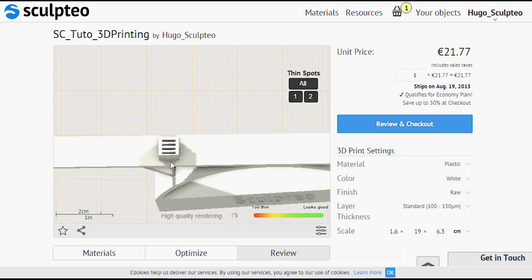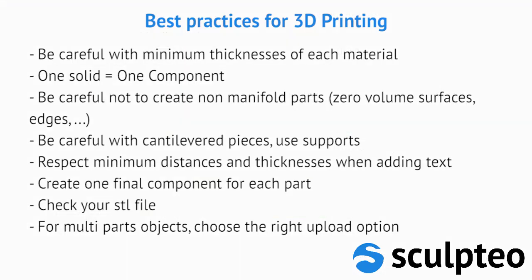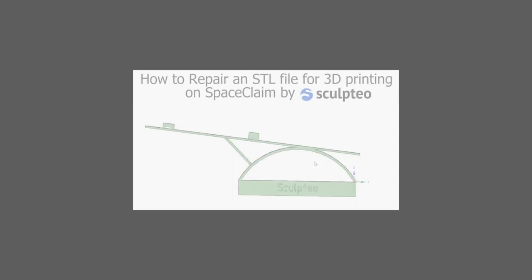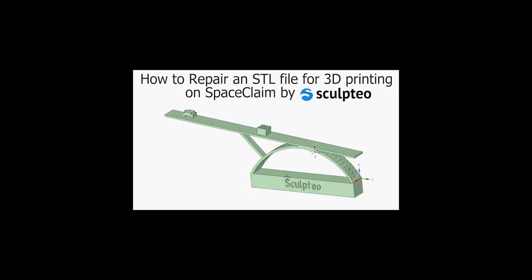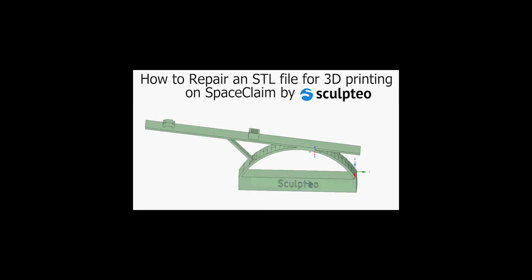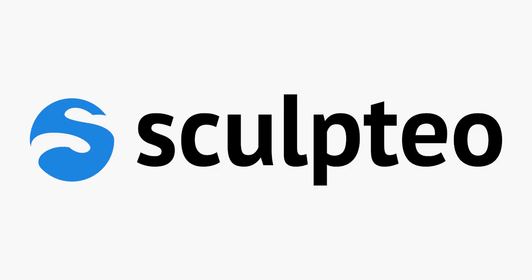Now you know how to model in SpaceClaim for 3D printing. Hope you guys enjoyed the video. Here is a summary of some of the best practices when modeling for 3D printing with SpaceClaim. Don't forget that if you want to save money, you can also shell the non-critical parts. If you want to learn more about how to repair an object that has not been properly modeled, please check out the next part of our SpaceClaim tutorial. Enjoy modeling and see you soon on sculti.com.